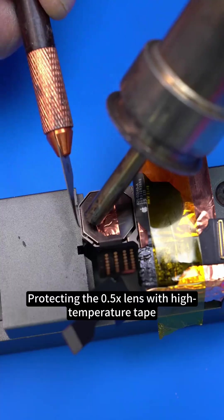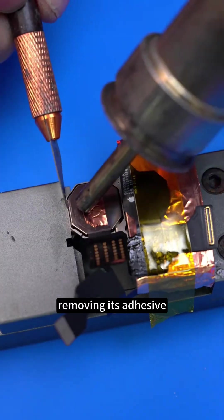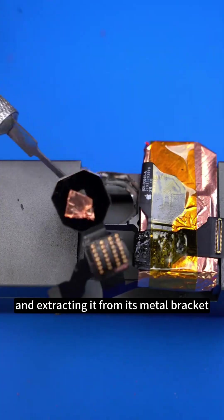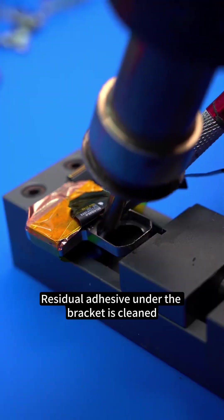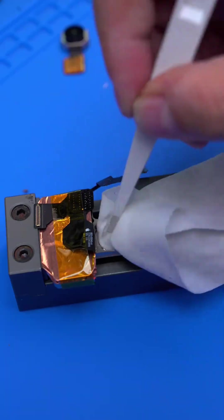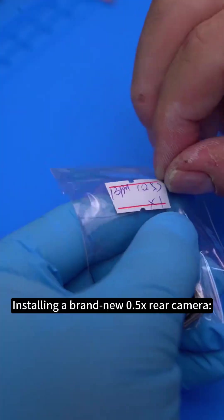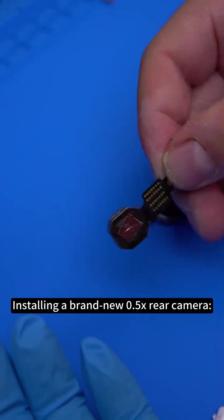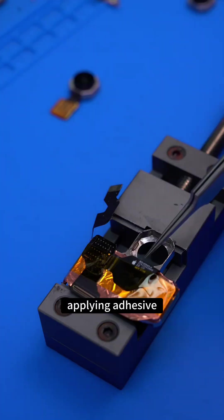Protecting the 0.5x lens with high-temperature tape, removing its adhesive, and extracting it from its metal bracket. Residual adhesive under the bracket is cleaned. Installing a brand new 0.5x rear camera, applying adhesive.